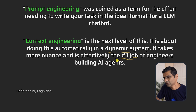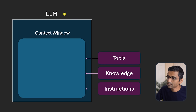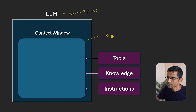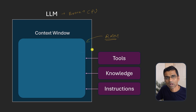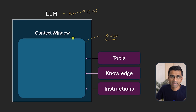If you consider the LLM as a brain or a CPU, then the context window is the RAM for your computer. If you have good quality data in your RAM, your output will be better. Context engineering is all about getting the right content inside your context window.